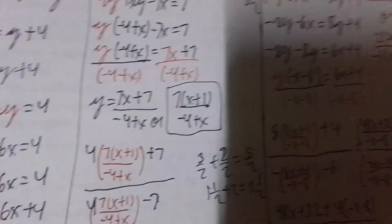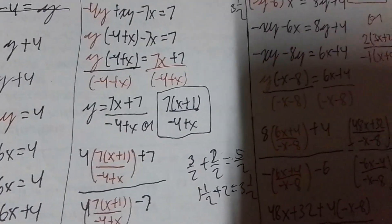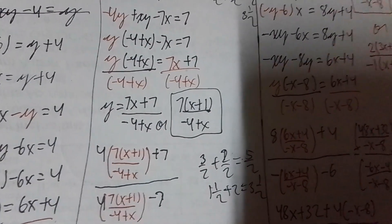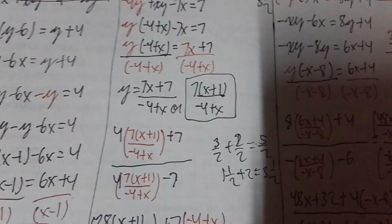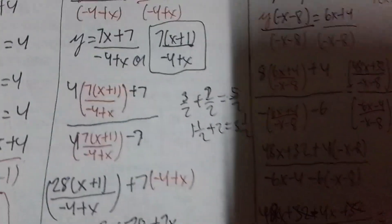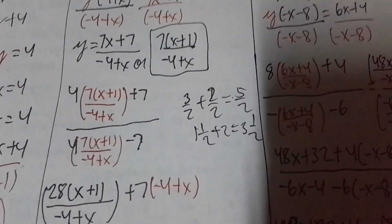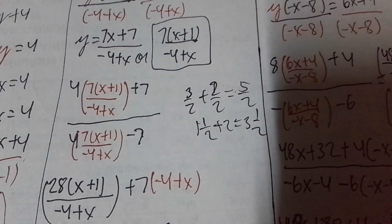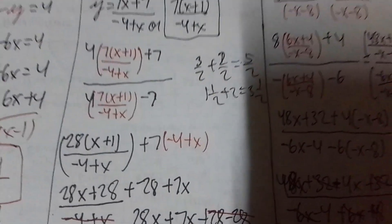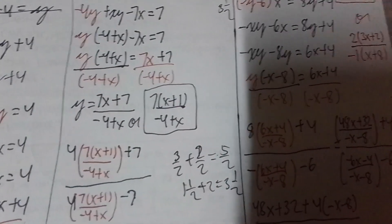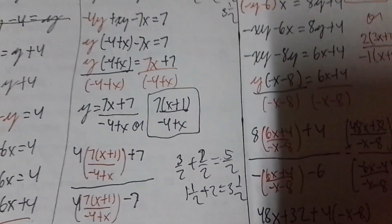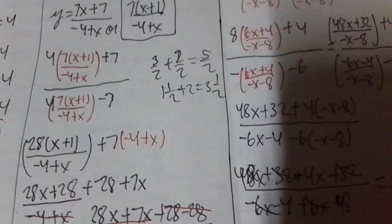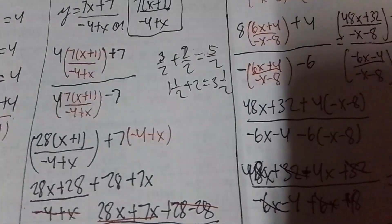The inverse of the function is 7x plus 7 divided by x minus 4 — or you can factor out 7 times x plus 1 all divided by x minus 4. That's the inverse of the function. Let's check: we put this inverse, 7 times x plus 1 quantity divided by x minus 4, into the original equation. First, we multiply everything there — 4 times 7 gives you 28, and 7x plus 7 is 28x plus 28. Then remember we need to add by 7, but since our denominator is x minus 4, we multiply by the LCD which is x minus 4.